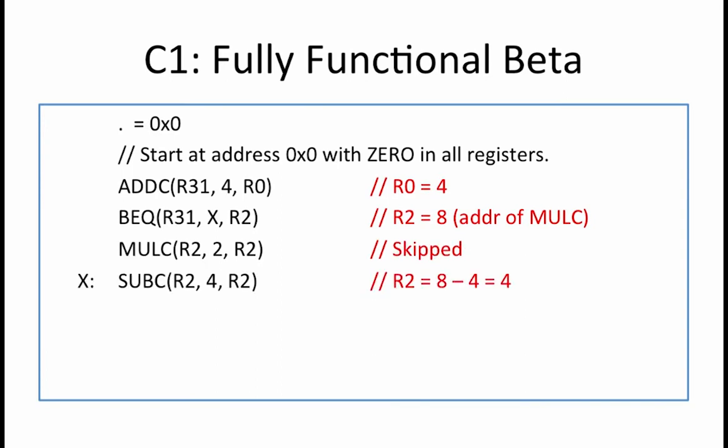Next, the SUBC subtracts 4 from the latest value of R2 and stores the result which is 4 back into R2. The ADDC adds R0 and R2, or 4 and 4, and stores the result which is 8 into R3.